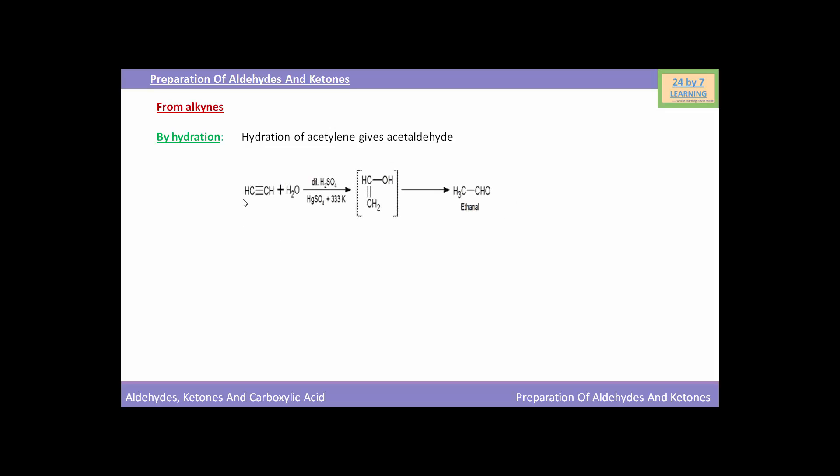You can see the reaction. HC triple bond CH, that is acetylene, when hydrolyzed in presence of dilute H2SO4 and HgSO4, that is mercuric sulphate, at 333 Kelvin temperature, will form an intermediate compound that is a primary alcohol which on tautomerization forms an aldehyde CH3CHO, that is ethanol.